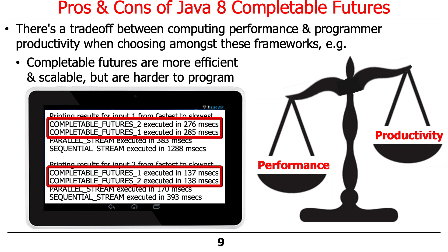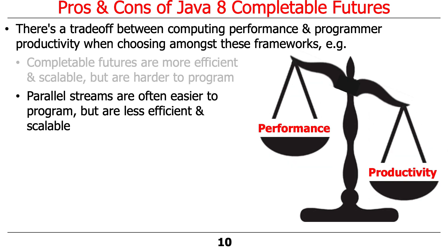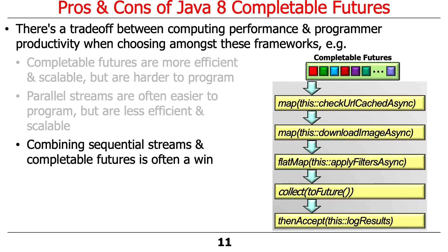Completable futures are more efficient and scalable — performance is good, but productivity is not quite as good because there's just more work to do. Conversely, parallel streams are often much easier to program, but they'll be less efficient and less scalable. You have to decide what's right for you. In many cases, parallel streams are perfectly fine if you want an n-fold speedup. You just write sequential code using a sequential stream, then change it to a parallel stream, and you get a speedup most of the time.